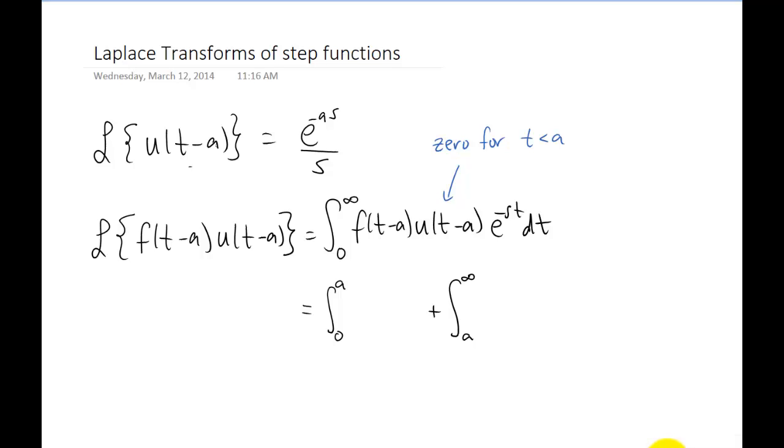And the piece from 0 to a is just going to be the integral of 0. And the piece from a to infinity, the value of the step function is just 1. So that is just going to look like this. Obviously the definite integral of 0 is just 0. So we get rid of that piece and this is what we're left with.